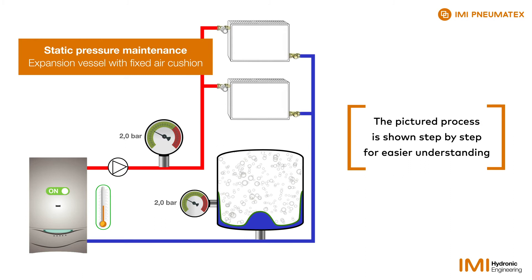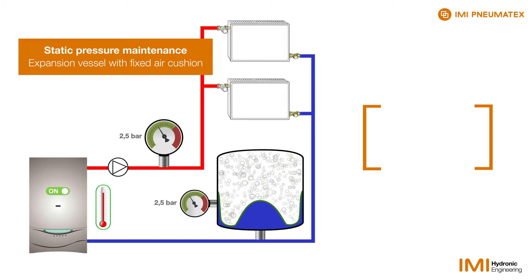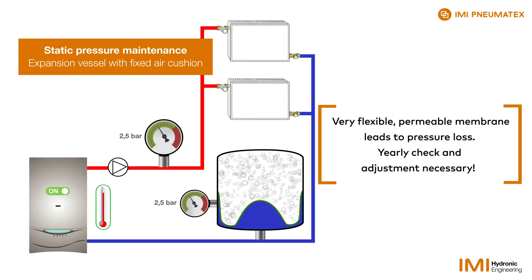If the system temperature continues to rise, the pressure also increases and the membrane continues to deform, allowing the heating water to flow into the vessel. The membrane must be extremely elastic, which results in a partial gas permeability known as loss of pre-pressure.